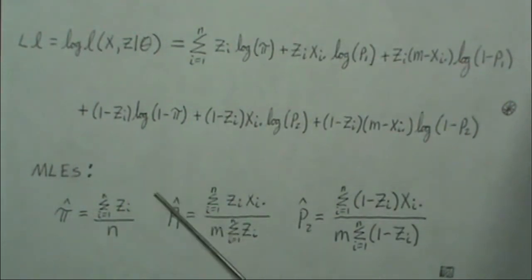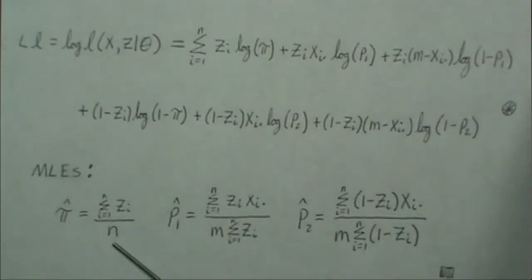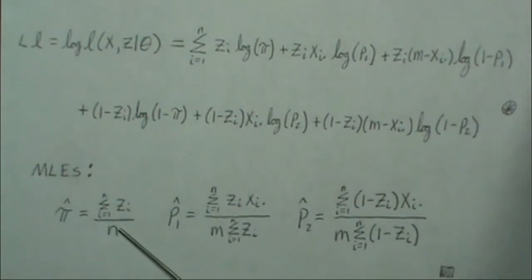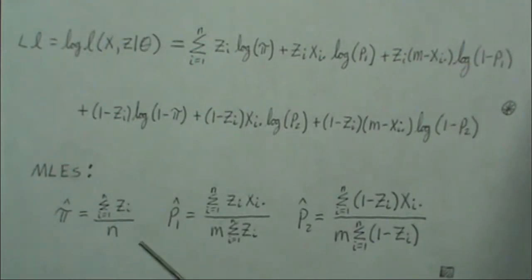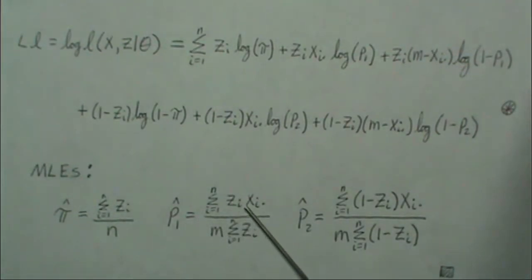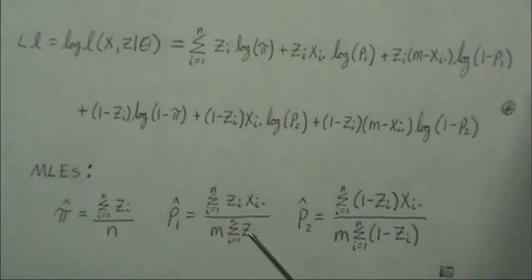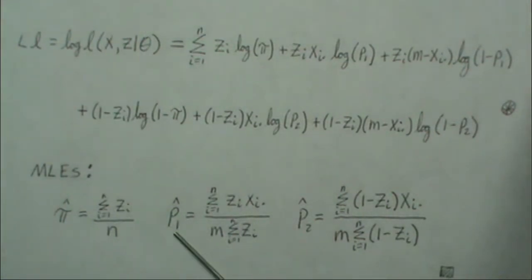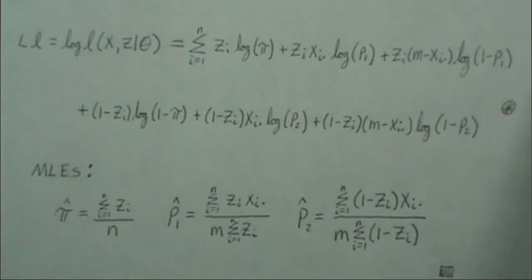The maximum likelihood estimates make intuitive sense: we're just counting the number of ones divided by n, which is the proportion of times we picked coin 1 — that's pi-hat. For P1-hat, it's the number of heads using coin 1 divided by how many times we flipped it. Same approach for coin 2.